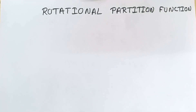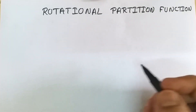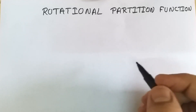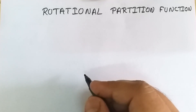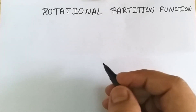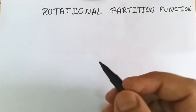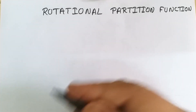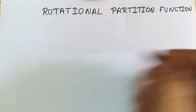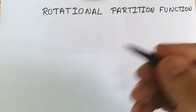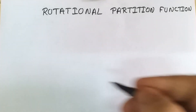Welcome. Today we are going to discuss rotational partition function. The rotational partition function is given by diatomic molecules only. Monoatomic molecules or single molecules like helium won't show rotation, because the rotation around the axis is not considered — only the rotation between two particles is considered. Suppose we have molecules like hydrogen, nitrogen, oxygen, or any diatomic molecule.